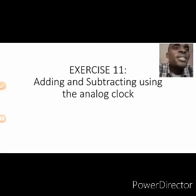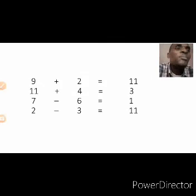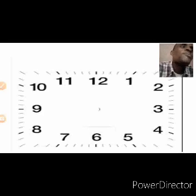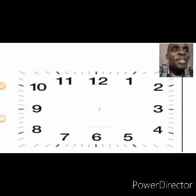We are going to be looking at adding and subtracting using the analog clock face. This is the analog clock face. From what you can see here, we have numbers from 1 to 12. They normally represent 12 hours of the day. But today, we are going to be making use of it to add and to subtract. What is going to surprise you is that the results are not going to be the usual results you are used to in mathematics. That is the fun of it.